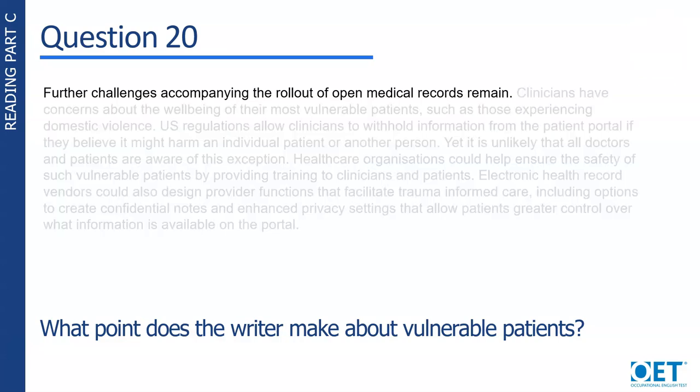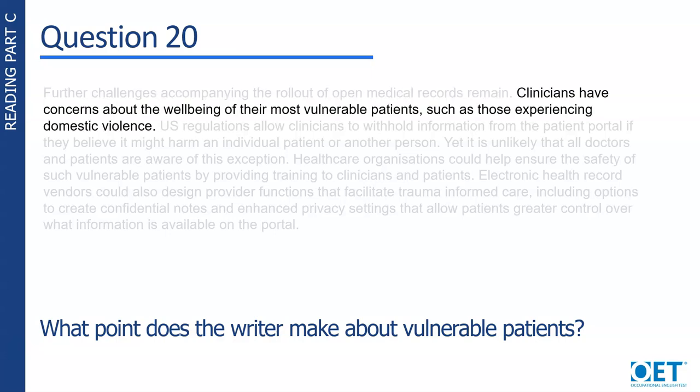Sentence 1 introduces the topic of the paragraph: challenges to the rollout of open records. Sentence 2 mentions clinicians are worried about vulnerable patients, an example of whom is given — those experiencing domestic violence.